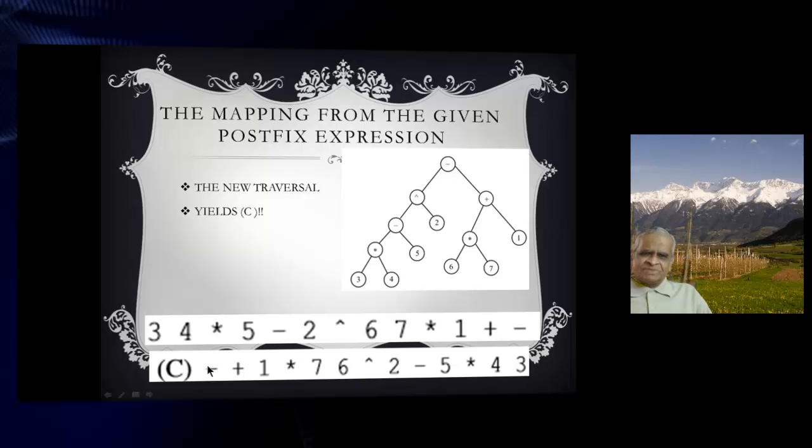First we have minus, right subtree plus, right subtree 1, right subtree star, right 7, left 6, then right 2, then minus, right 5, then star, right 4, then 3. Following this traversal, we will get the answer.